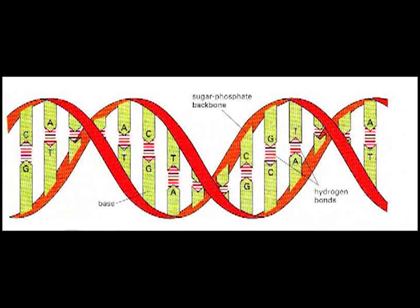If you take the DNA double helix and split between the different nucleotides down the middle, you actually get complementary base pairs. So you can take the DNA nucleotide sequences from one side of the strand and know what the opposite DNA strand codes for as well.